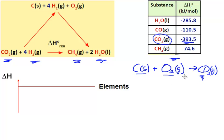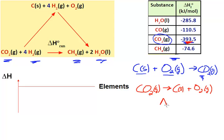An important thing here: if I reverse this reaction, that would represent the decomposition of CO2. So CO2 gas decomposing to form carbon solid plus O2 gas — I can just take the enthalpy of formation and change the sign on it. So the enthalpy of decomposition for this reaction would be plus 393.5 kJ per mole.